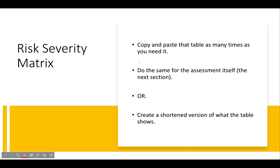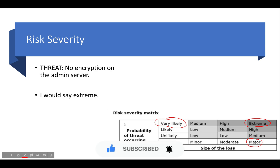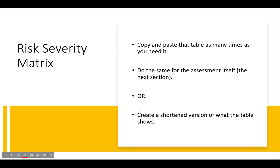For the risk severity matrix, copy and paste the table as many times as you need it — or create your own. For every single weakness I find, I fill in the information. I would highlight the relevant cells: probability highlighted green for very likely, size of loss as major, risk severity as extreme — making it obvious to the examiner what I think about that threat. You could also create a quick summary table with columns for threat, probability, size of loss, and risk severity.